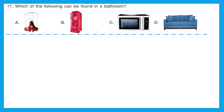Question 11: Which of the following can be found in a bathroom? Is it geyser, fridge, microwave or sofa? Fridge and microwave are part of the kitchen, and sofa we can find in the living room. So the right option is A — geyser. It is used to heat water.